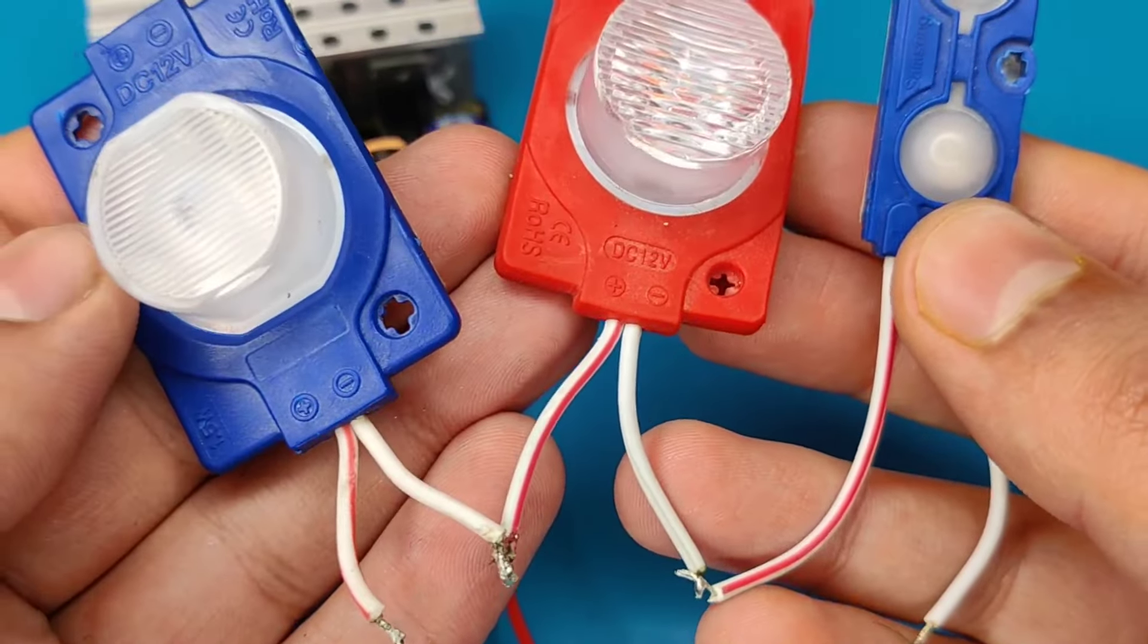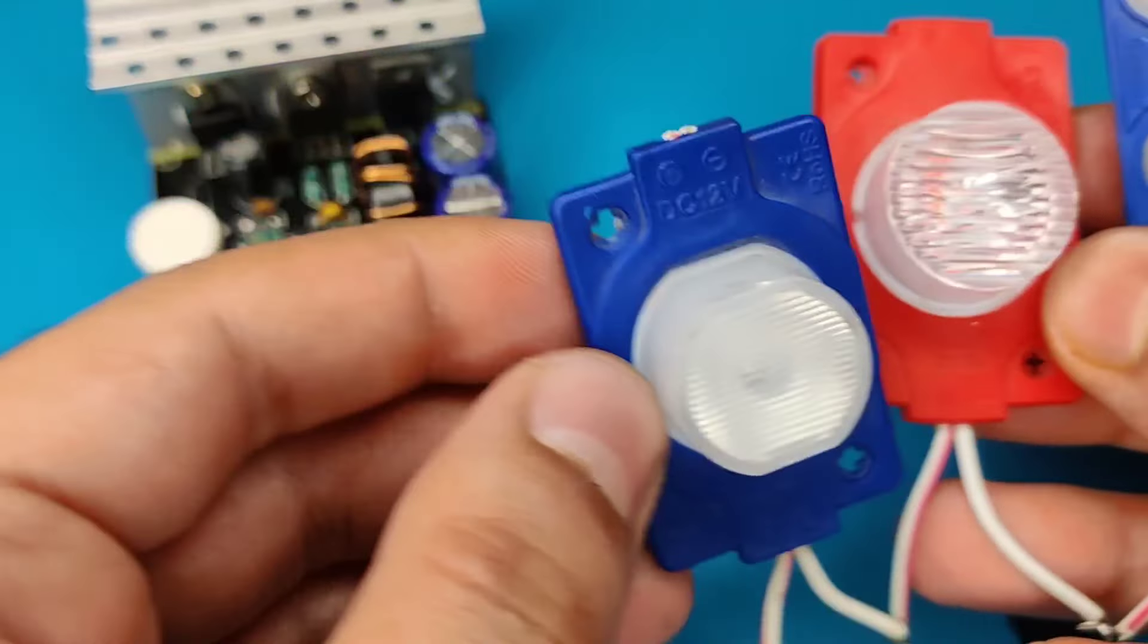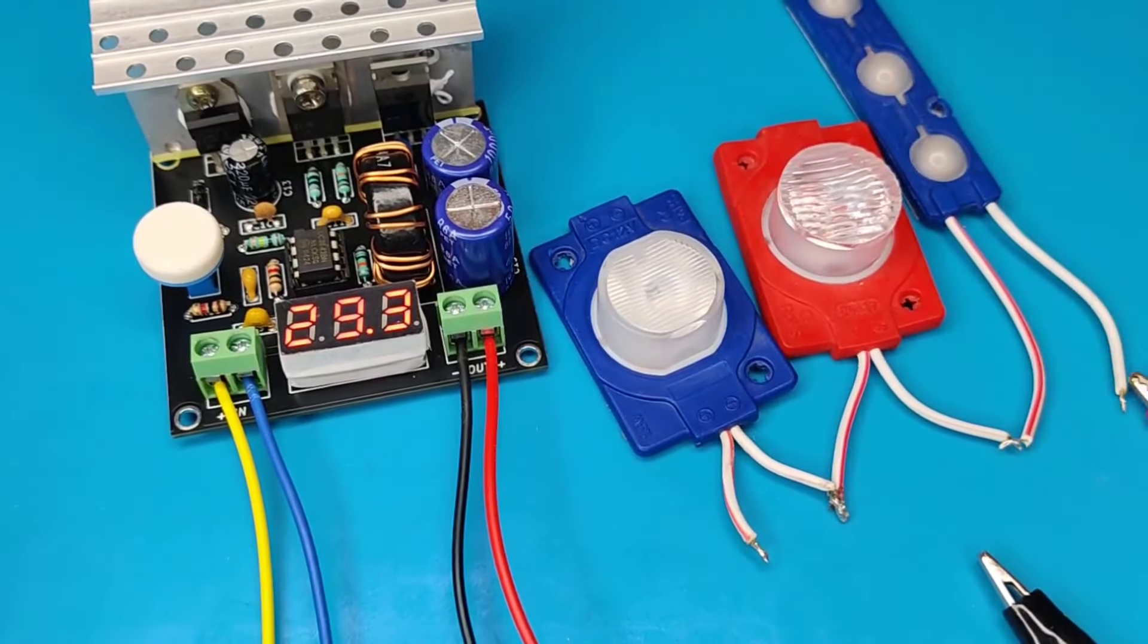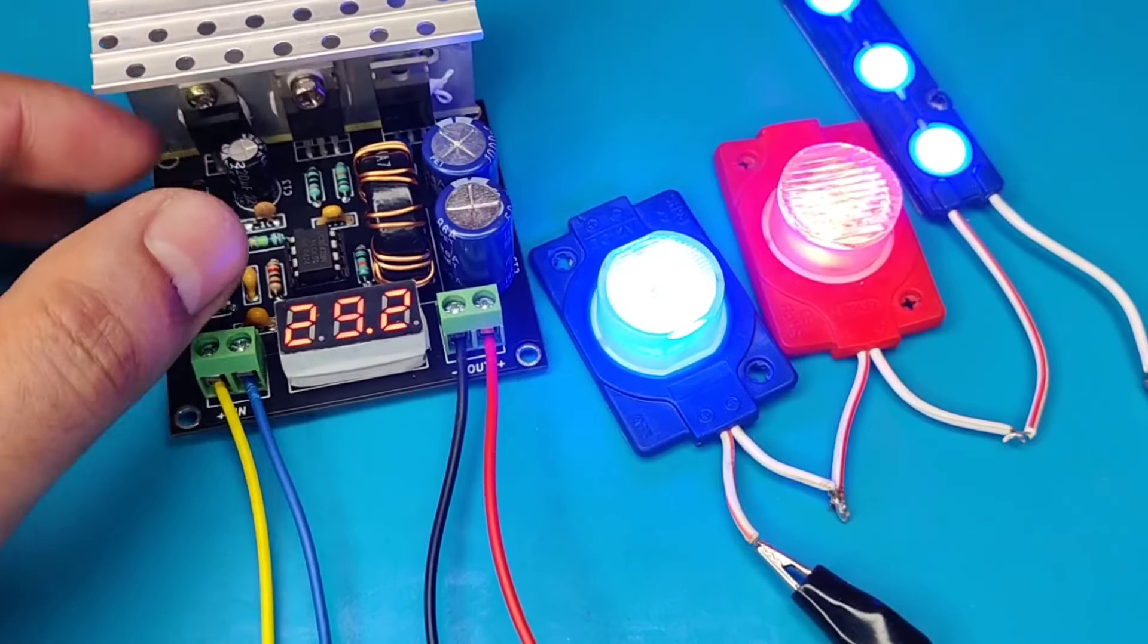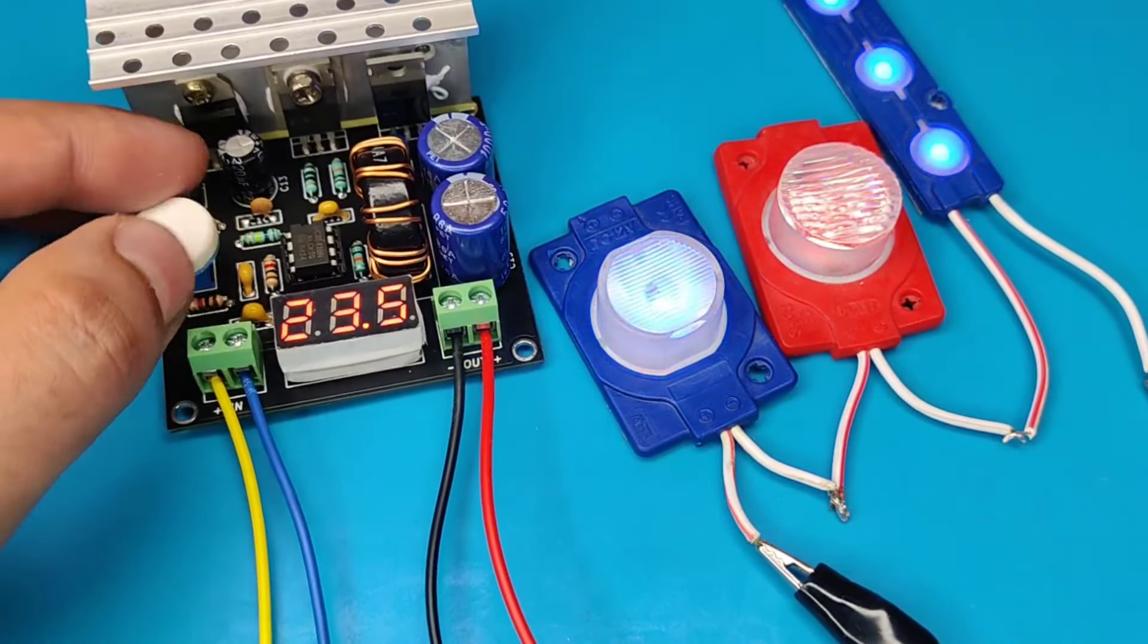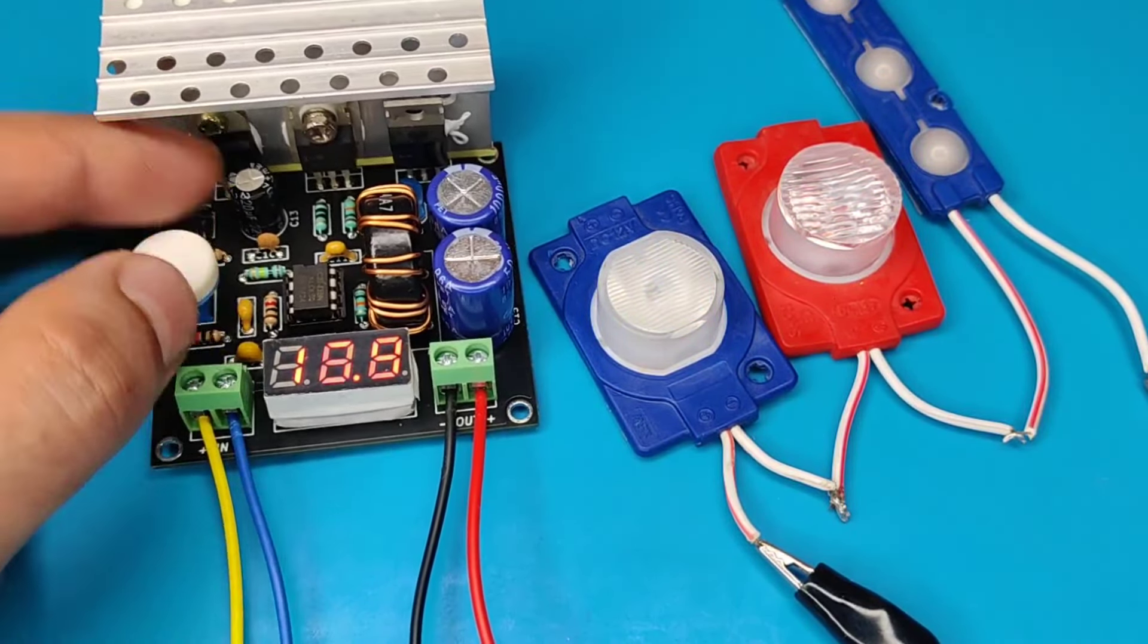Now let's test these three pieces 12-volt LEDs in series. As you can see, the circuit is working perfectly and can do both tasks: increase or decrease output voltage.